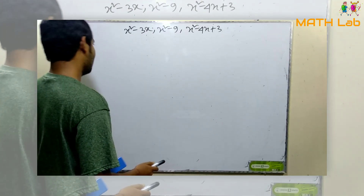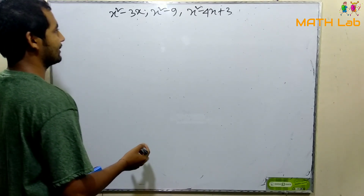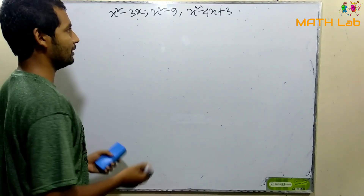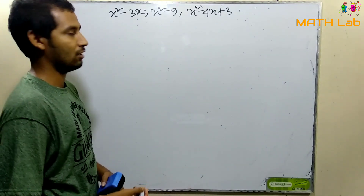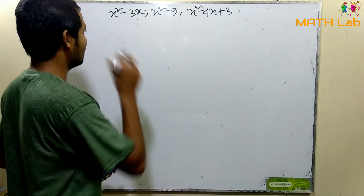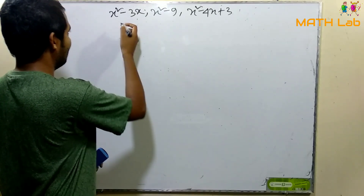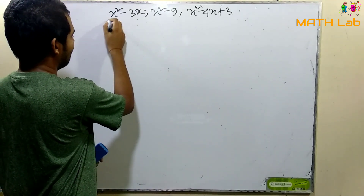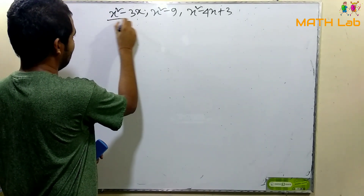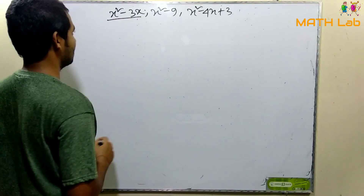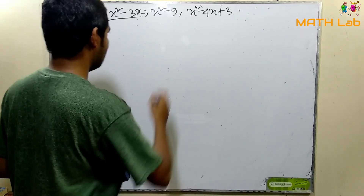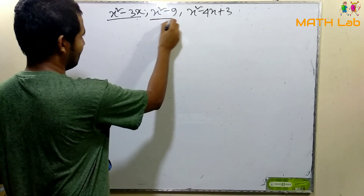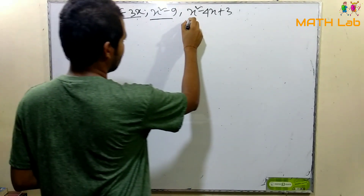We are now using 4x and here we will show 5x. We will show 6x minus 3x and 5x.